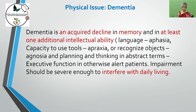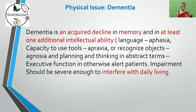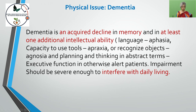There are many physical issues commonly found in the elderly population. First and foremost is dementia. It is an acquired decline in memory and in at least one additional intellectual ability such as language — aphasia, capacity to use tools — apraxia, or the ability to recognize objects — agnosia, and planning and thinking in abstract terms — executive function, in an otherwise alert patient. The impairment should be severe enough to interfere with daily living, and when it does, the patient should be considered for palliative care.